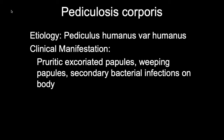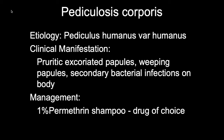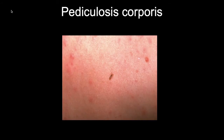Next is pediculosis corporis, or body lice, caused by Pediculus humanus humanus, which is region specific to the body. Treatment is the same as pediculosis capitis — 1% permethrin shampoo — with the same application method. Lesions are non-specific, described as pruritic excoriated papules, sometimes weeping papules, and often with secondary bacterial infection due to scratching.